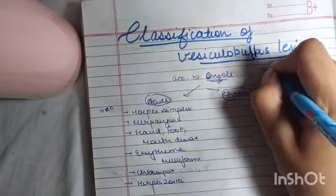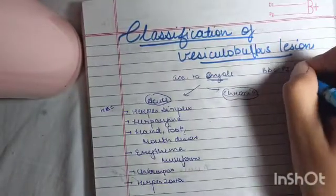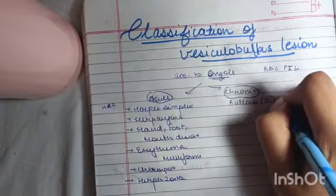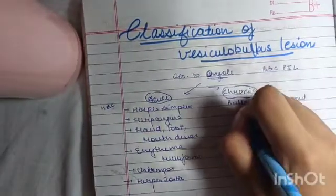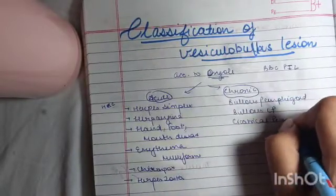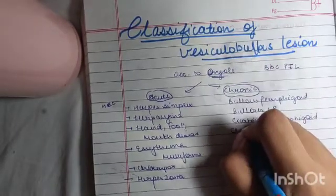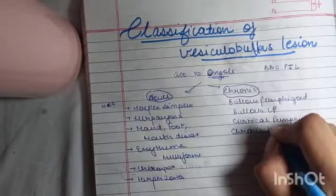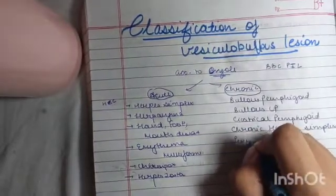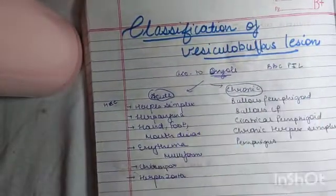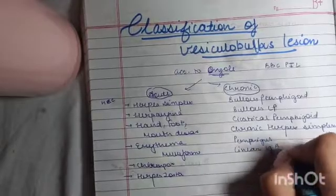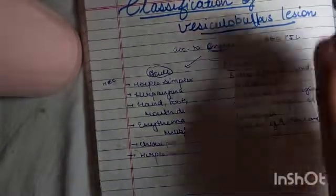Now for chronic, remember BBC pill. Just remember there is nothing for I. So B for bullous pemphigoid, then B for bullous lichen planus, C for cicatricial pemphigoid. Then again we can write C, so chronic herpes simplex. Then by P, pemphigus. I, remember there is nothing from I, and L will be linear immunoglobulin A disease. Now this was on the basis of onset.